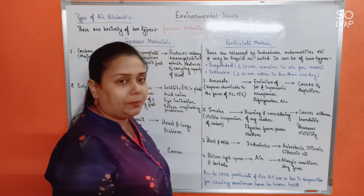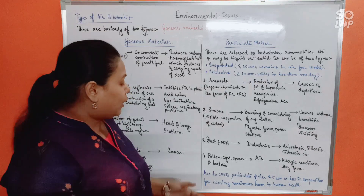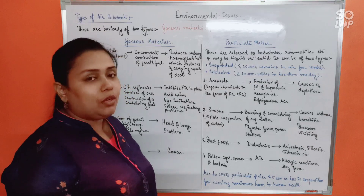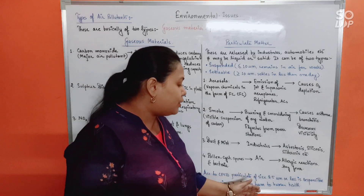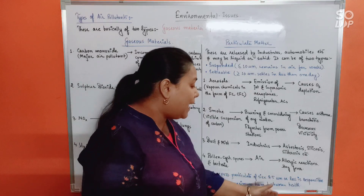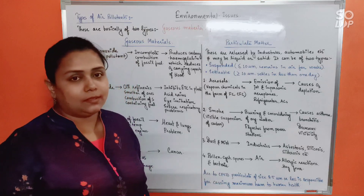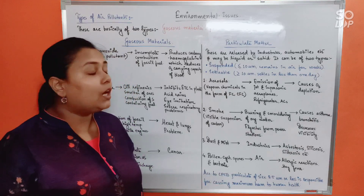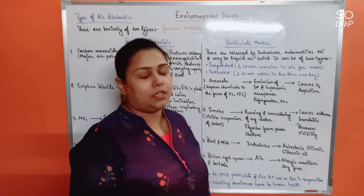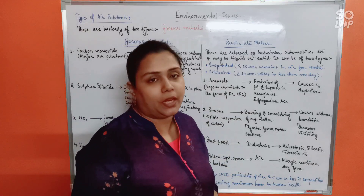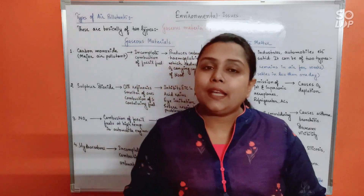According to CPCB (Central Pollution Control Board), particulate matter of size 2.5 micrometers or less is responsible for causing maximum harm to human health. Remember this size — 2.5 micrometers is the most hazardous for human health.